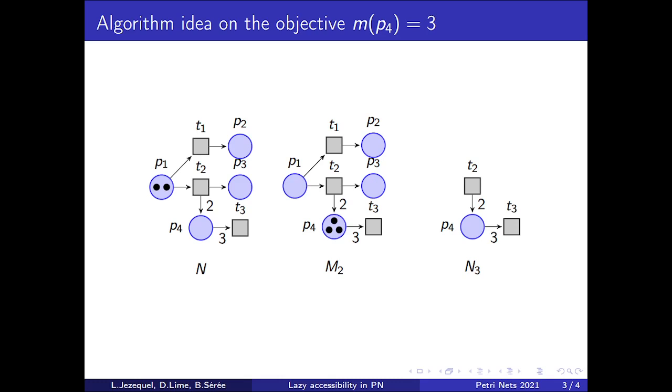Finally, to fire T2, there is a need for tokens in P1. All the transitions that could add tokens to places in N3 are considered. We say that N3 is T-complete. And all the transitions that could remove tokens from P4 are considered. We say that N3 is M-complete. And M2 is not reachable in N3. This allows to prove that M2 is not reachable in the original net N.